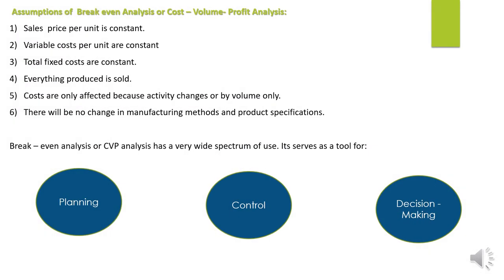Assumptions of break-even analysis or cost volume profit analysis: पहला — sales price per unit constant रहेगा; variable cost per unit भी constant रहेगी; total fixed cost भी constant रहेगी। जो भी produce किया जाएगा वो सब बेचा जाएगा, that means volume of production equals sales। Cost affected होती है जब level of activity या volume of production में change आता है। Manufacturing method और product specification में कोई change नहीं होगा — that means short run की बात की जा रही है।